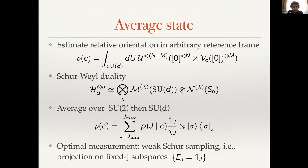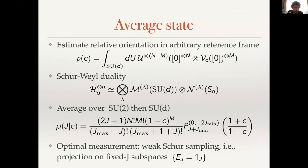The optimal measurement to extract information from this state is a projection on subspaces with fixed j — this is called Schur sampling. In general it's a collective measurement, and it gives a given j outcome with a probability we derived as an exact expression involving a Jacobi polynomial. From this we can get approximate results.